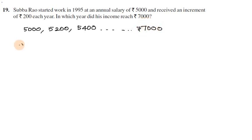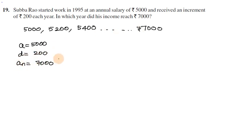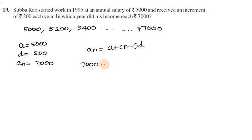So a is 5,000, common difference d is 200, and the last term aₙ is 7,000. Using the formula: aₙ = a + (n − 1) × d, where aₙ is 7,000.